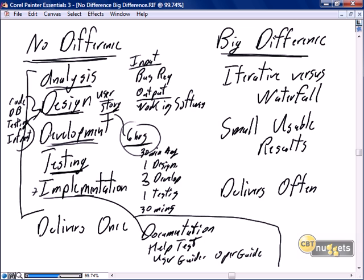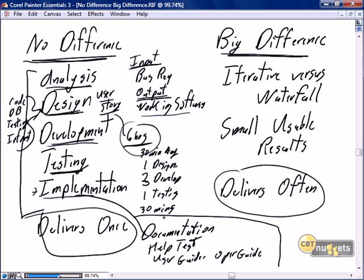So again, there's no difference — we have an input and an output of working software. Within each story, not just each sprint, we do analysis, design, development, testing, and implementation. However, there is one significant difference between traditional development and Scrum: in traditional development, we typically do each of these phases once.